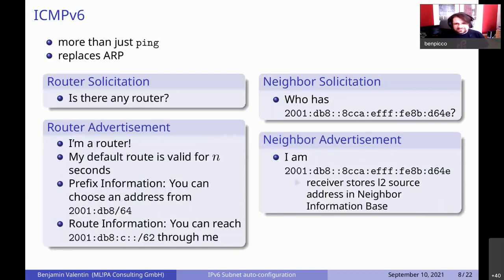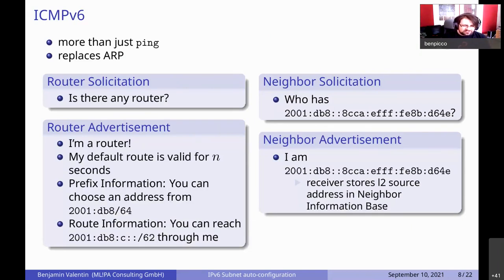Let's get into the details of IPv6. There is ICMPv6, which is familiar because of the ping command, but it's actually more than that — it's for all kinds of control messages on IPv6. It replaces the Address Resolution Protocol; instead we do Neighbor Discovery. If I want to send something to another host on the same link, I send a Neighbor Solicitation asking who has that address. The node answers, I can look at the layer-2 address, and store that in my neighbor information base, so the next time I want to reach a node I still have it cached.